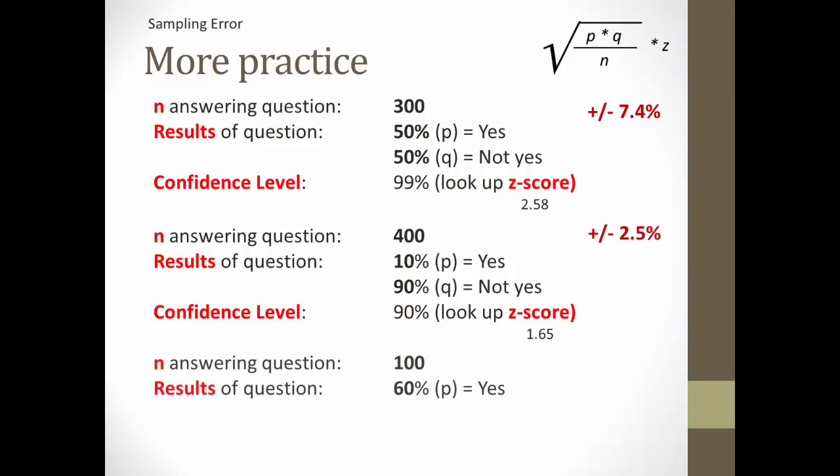Okay, last one. Now we have 100 answering the question, with 60% who said yes, or P. So, Q is 40%, and the confidence level we want to use for this one is 95%. You look up the Z-score, you find 1.96, plug it all into the equation, and you'll get plus or minus 9.6%.